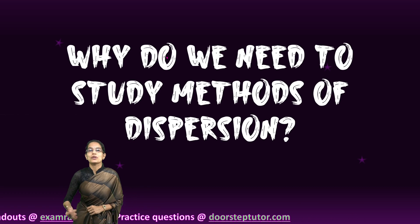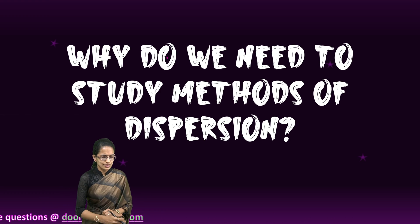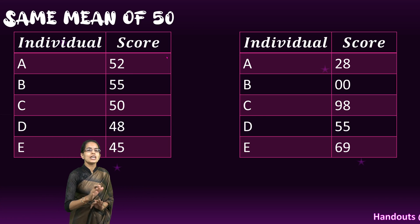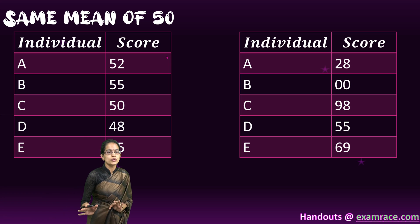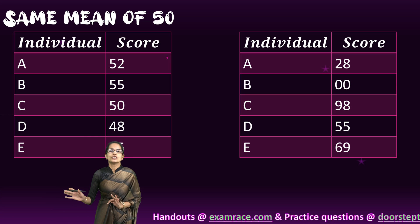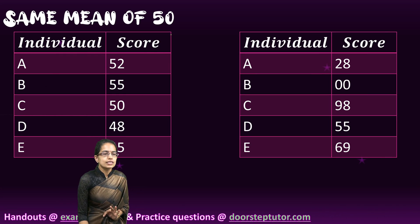A simple question that would come into your mind is why don't we study measures of dispersion under statistics? We have a very simple example and an answer for you. We have two sets of groups with five individuals in each of the groups and the scores they obtained during the event that happened.